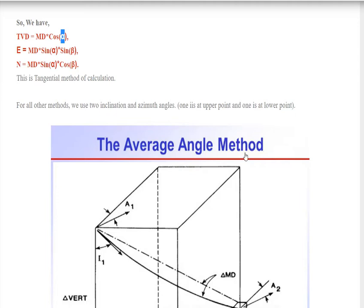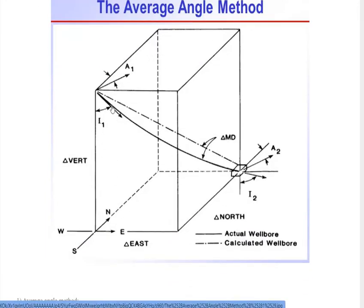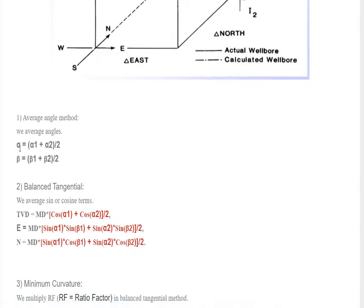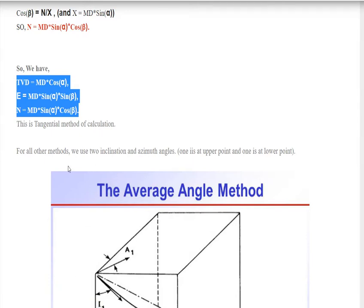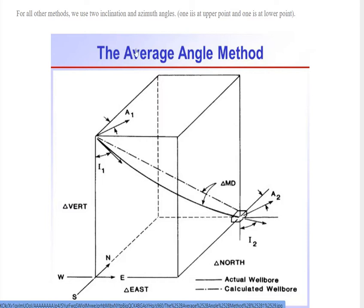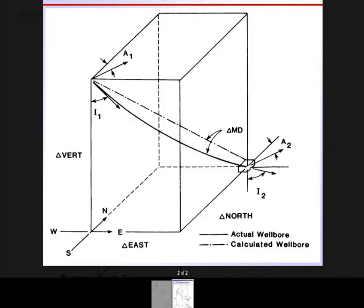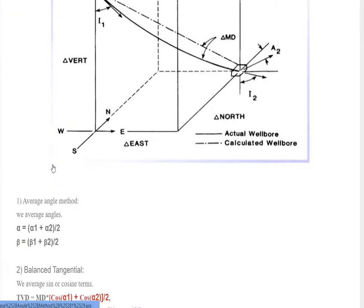The next method is the average angle method. In this method we take two inclination angle values — this is a two-point method. We average both inclination values and do the same for the azimuth values. We have α1 and α2, then take the average: alpha = (α1 + α2) / 2. The same is done for azimuth, and these averaged values are substituted into the same equations. This is called the average angle method.